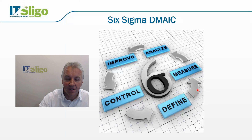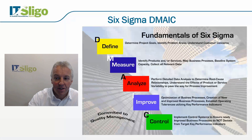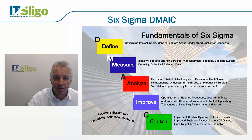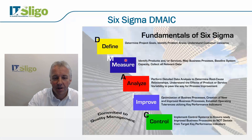Six Sigma teams use DMAIC for their projects, whether Green Belt or Black Belt. This chart shows in more detail what each phase means. Define (D) is about defining a problem or improvement opportunity — determining goals, identifying problem areas, and understanding customer concerns. You might see different definitions of what exactly goes on in each phase, and some tools are used in more than one area, which is fine given the iterative nature of the process.